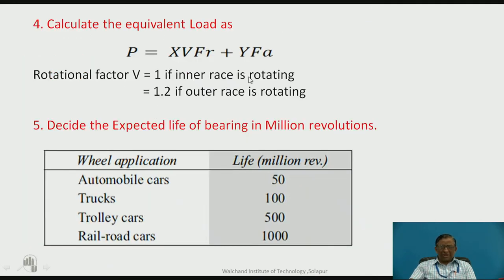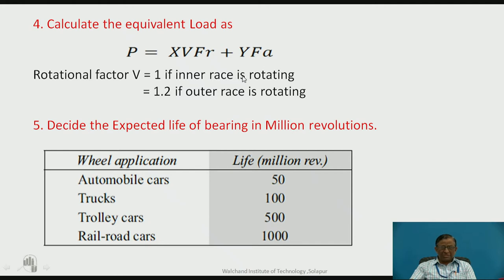With the help of X and Y, we calculate the equivalent radial load acting on the bearing. Because the bearing is subjected to both radial and axial loads, we convert the combined load into equivalent radial load P, given by P = X·V·FR + Y·FA. Here X and Y are from the table, FR and FA are the actual load values, and V is the rotation factor — V equals 1 if the inner race is rotating on the shaft, and 1.2 if mounted on an axle.